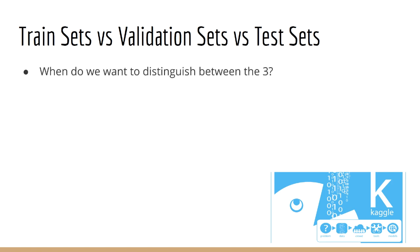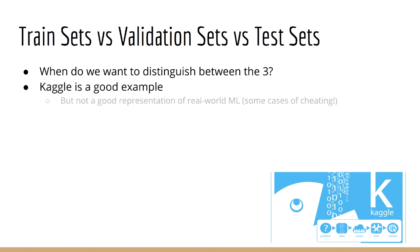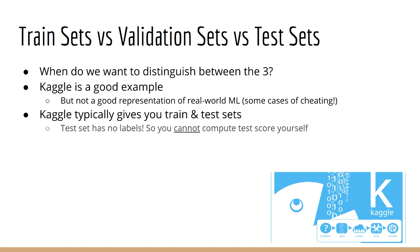So in what case will we want to distinguish between train, validation, and test? For this, I like to think of Kaggle contests, although it's well known that Kaggle contests are not a good representation of how you will do machine learning in the real world. In fact, there have been multiple instances of cheating on the platform. In any case, the way that Kaggle works is this. You will have some data that Kaggle gives you to train your model on. These are typically labeled as train and test. Importantly, the test set does not come with any labels, so you can't compute your model's performance on the test set by yourself.